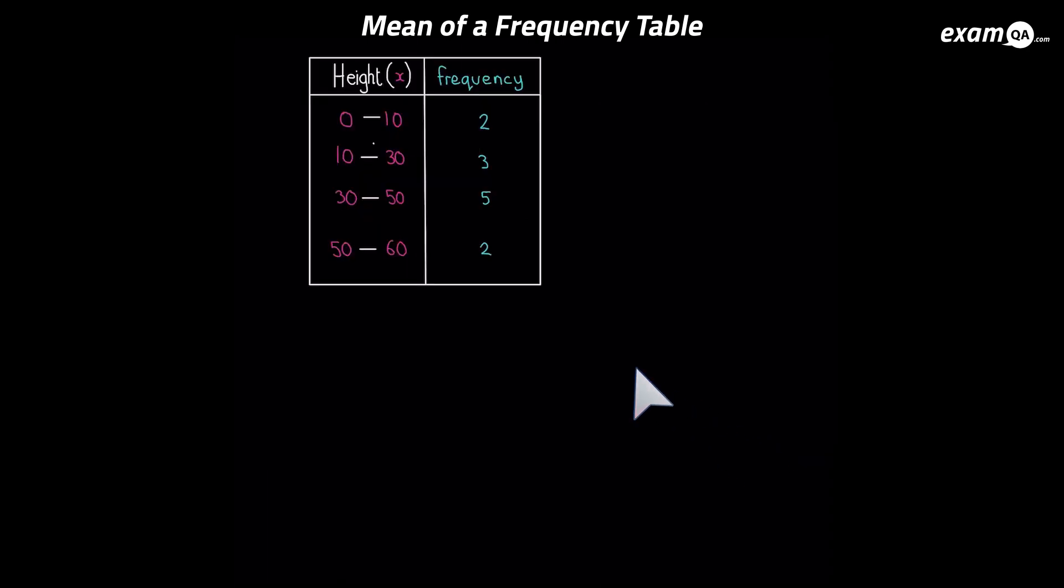Now we're going to look at an example where there's intervals. So the first interval is 0 to 10. The next interval is 10 to 30. And so on. So how do we do these ones? Well, we're going to need to make two columns.